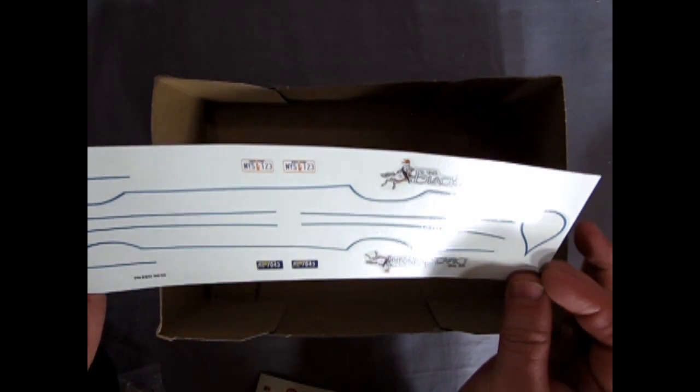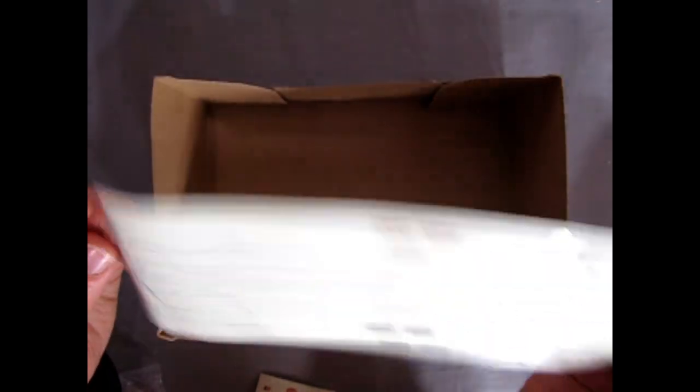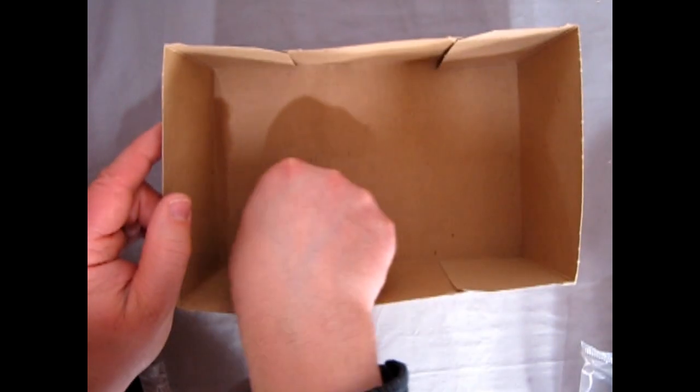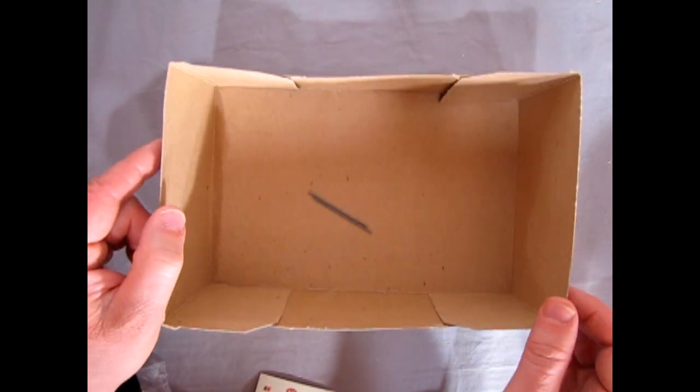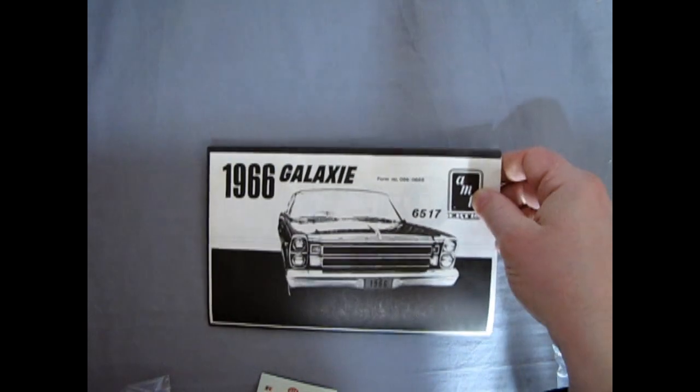And of course the pinstripe for the teardrops. You get New York license plates, as well as Kansas City. We're going to Kansas City. And two metal axles. The last little components in the box. So let's take a look at our Ford instructions coming up next.